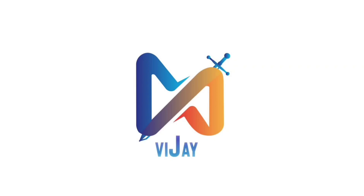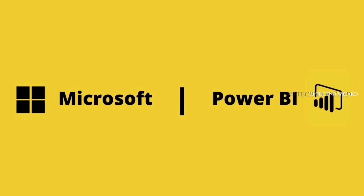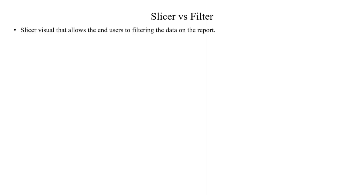Hello guys, welcome to VJ TechnoVizier. Today we are going to talk about Slicer vs Filter. What we are using is end uses. In the report we have published for the user, we will filter out the data. The slicer will filter out the data — like filtering 2020 data. So it is completely based on end uses.